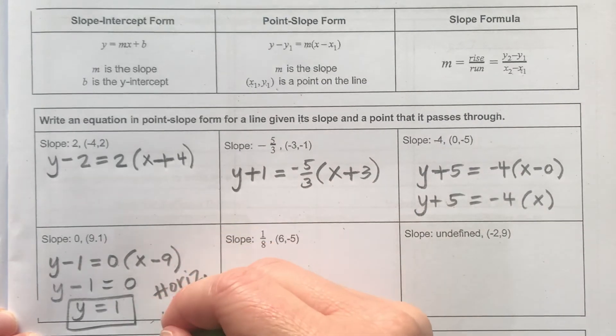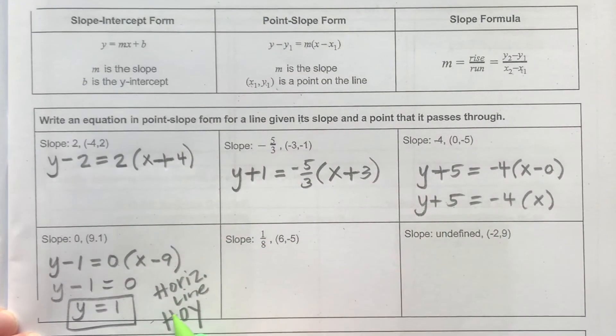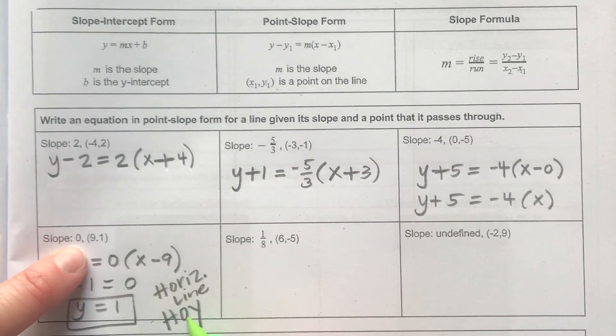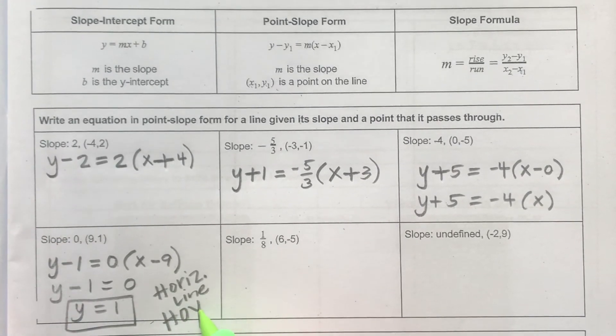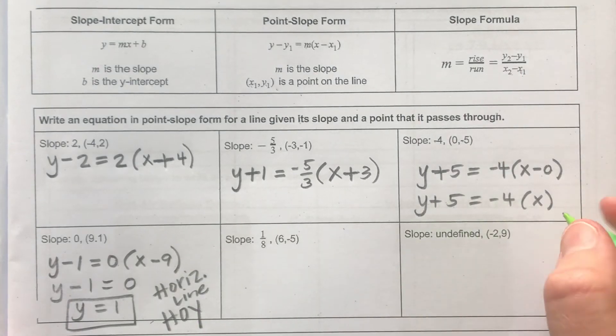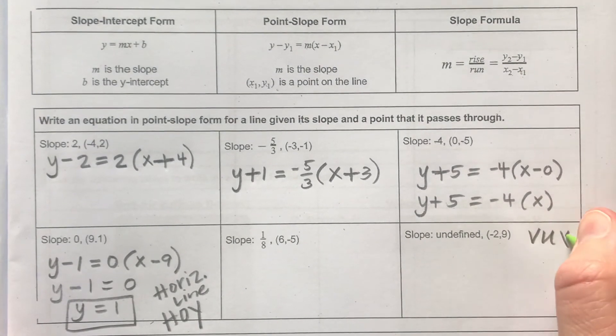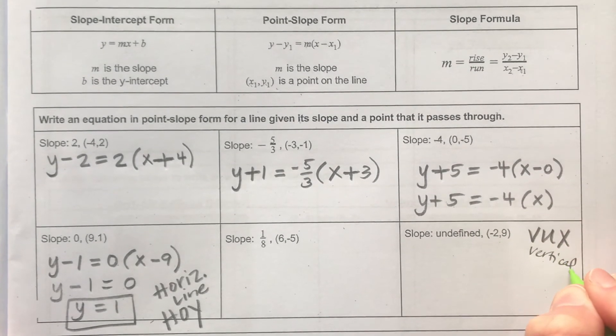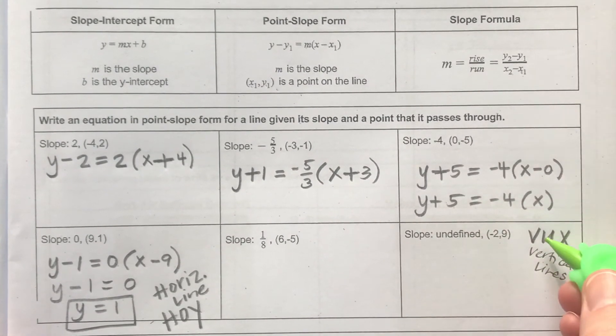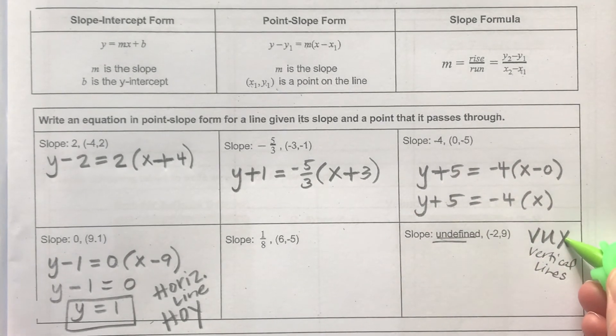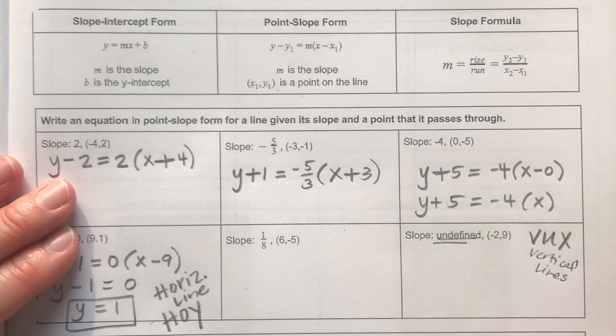And that helpful phrase, hoy, hoy, stands for horizontal lines have 0 slope, and they are in the equation y equal to a number. So I'll actually do this problem next.